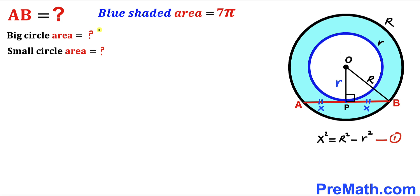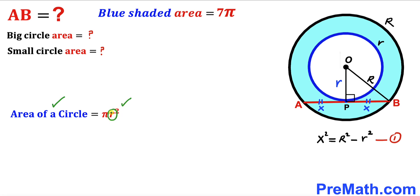Now we are going to calculate the area of the big circle and the area of the small circle. Recall the area formula: Area = πR², where R is the radius. The radius of the big circle is uppercase R, so the area of the big circle is π times R².